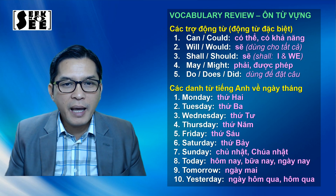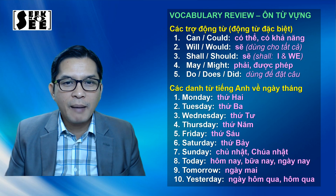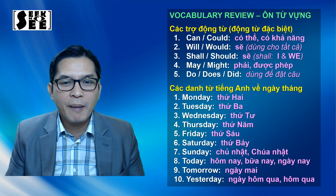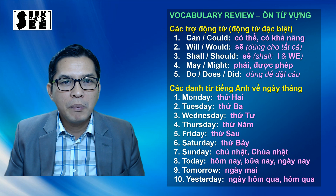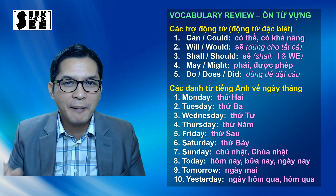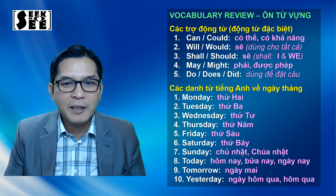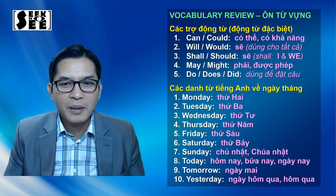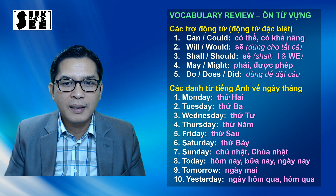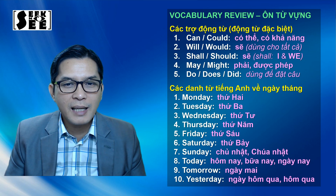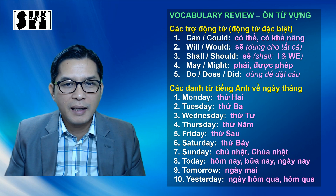Chúng ta để ý chữ D có 2 cách phát âm. Thông thường thì chúng ta sẽ nghe âm E, nhưng mà ở một số vùng ở Mỹ hoặc là người New Zealand hoặc là người Úc thì âm E có khi họ chuyển thành âm Y ngắn. Thứ 2: Monday. Thứ 3: Tuesday. Thứ 4: Wednesday. Thứ 5: Thursday. Thứ 6: Friday. Thứ 7: Saturday. Chủ nhật: Sunday.